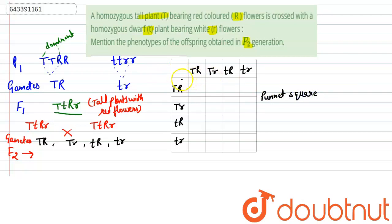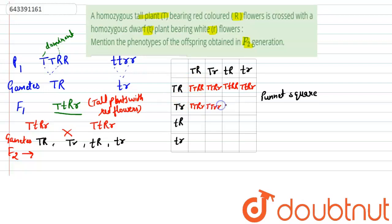Now self-pollination takes place. Capital T capital R combined with capital T capital R gives capital T capital T capital R capital R. Similarly capital T capital T with capital R small r; capital T small t with capital R capital R; and capital T small t with capital R small r. In this way we solve this and the Punnett square is formed, with capital T capital T, capital R small r; capital T small t capital R small r; and so on.